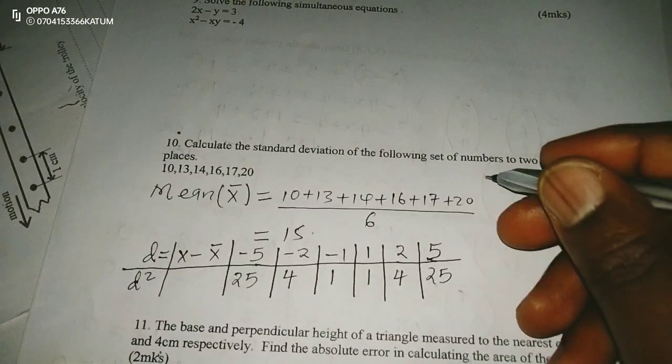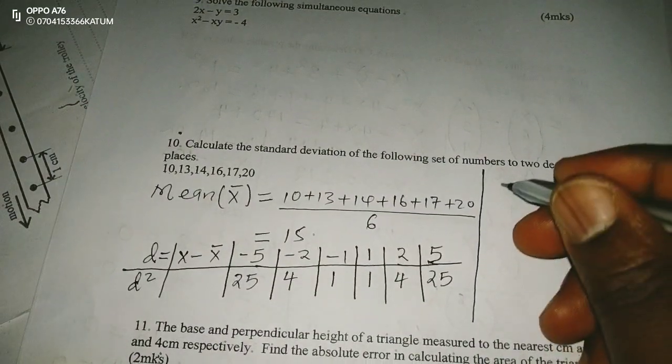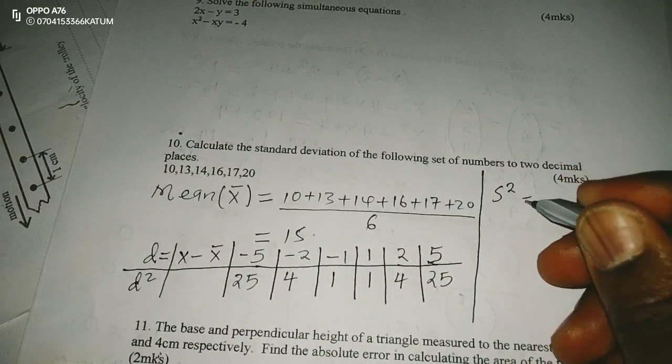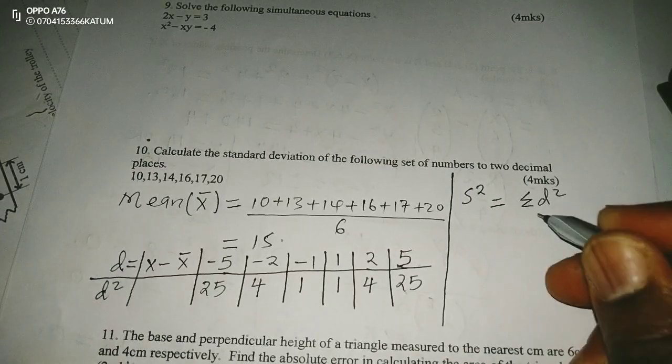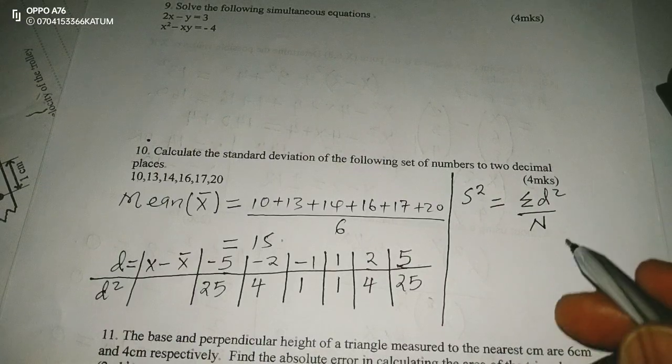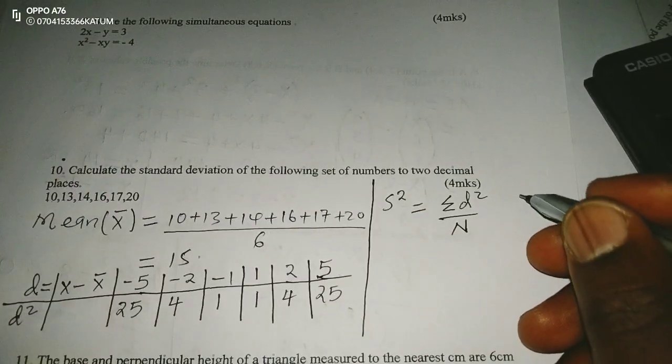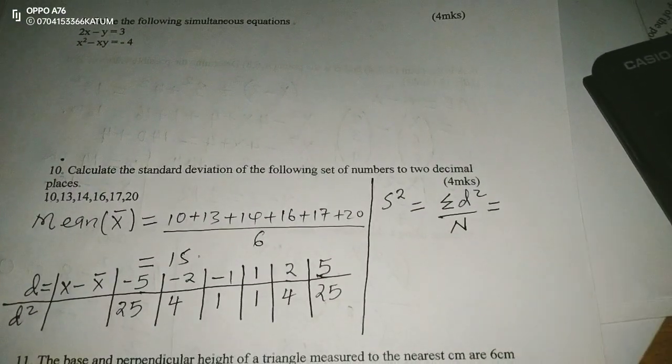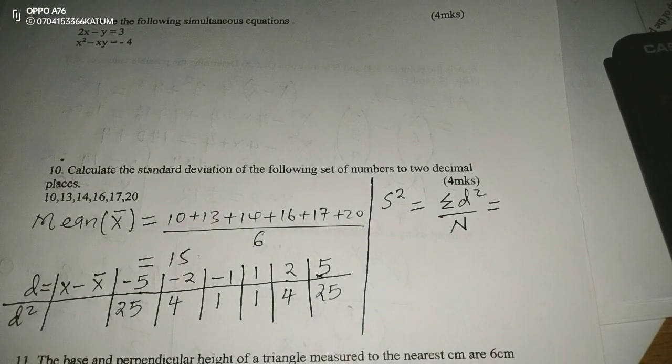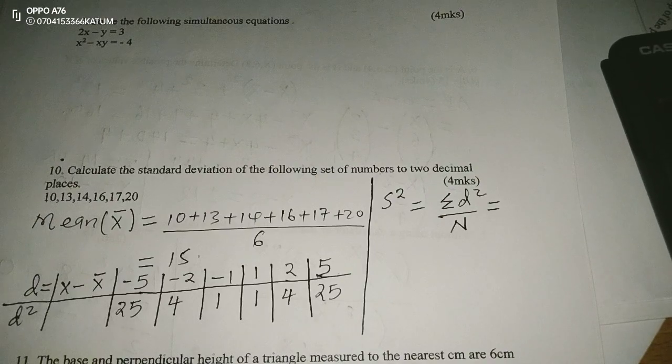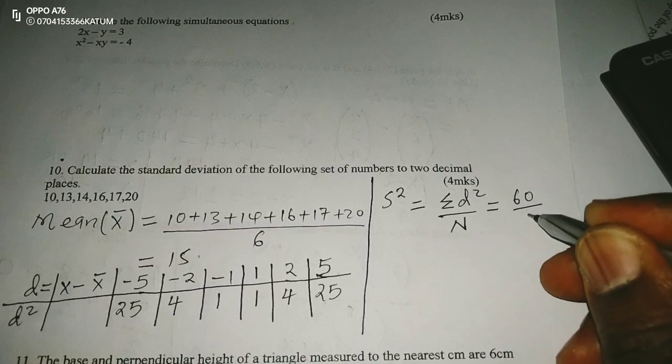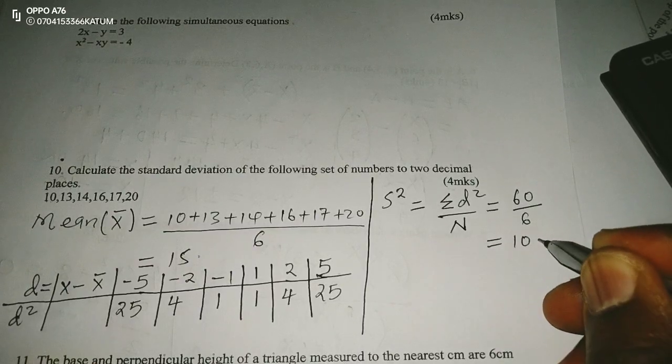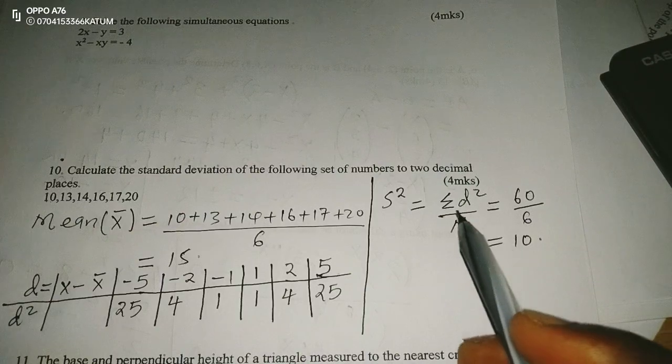Whatever we call variance, this is S squared, for ungrouped data, will be the mean of all the deviations squared. So when I add up all the deviations squared, then I divide by the number of items. This is going to be 25 plus 4 plus 1 plus 1 plus 4 plus 25, giving me exactly 60. Divide by 6, I will be getting 10 as the variance.